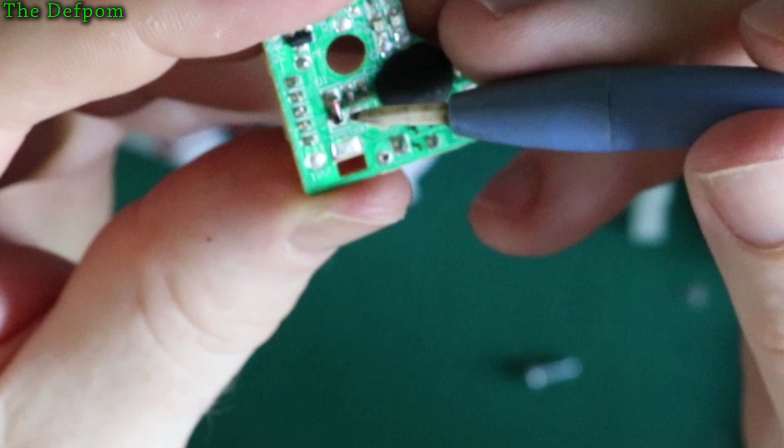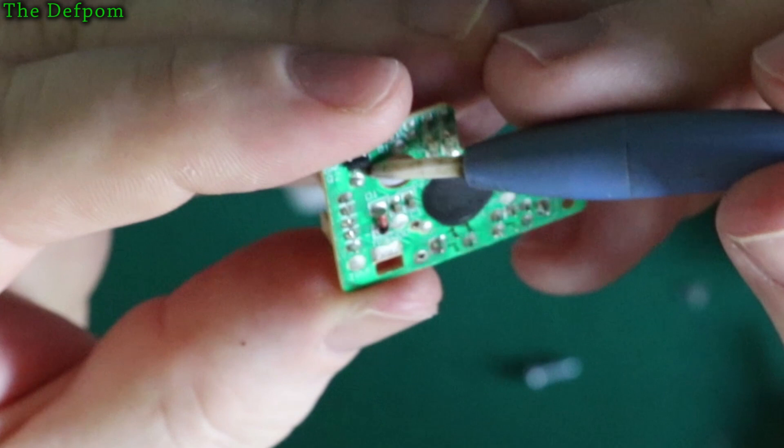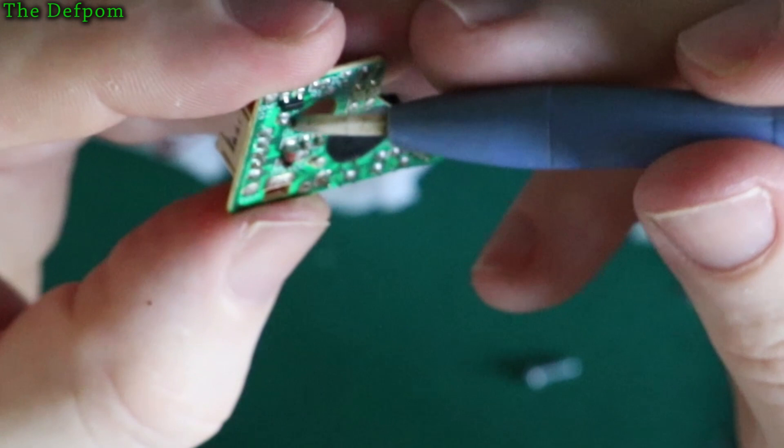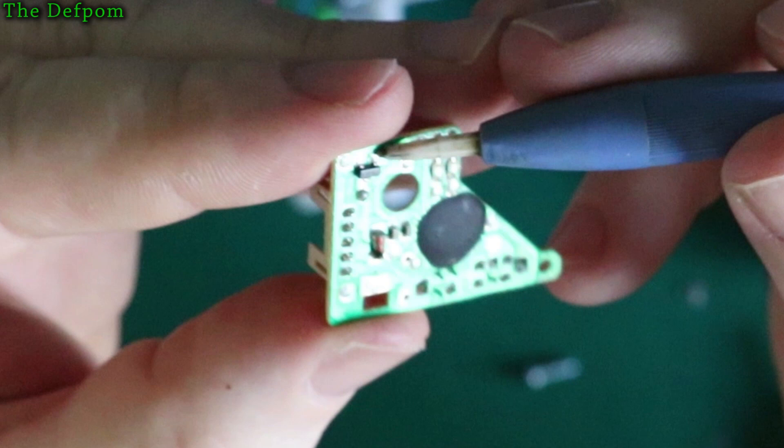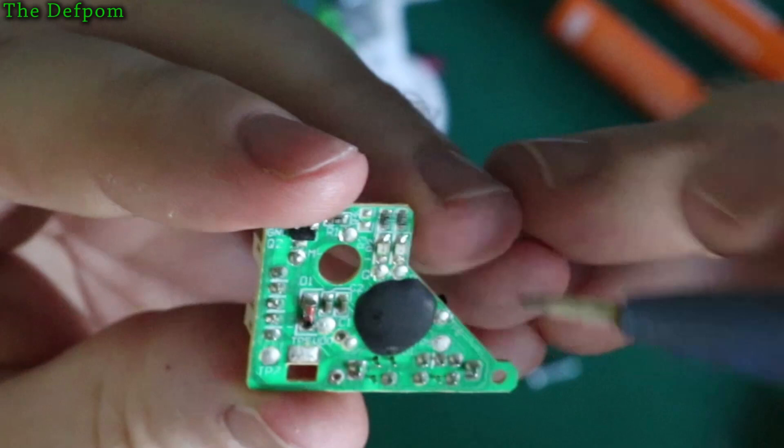That diode there is just reverse polarity protection. And that transistor there is going to that pin there, which is the motor. So it's obviously switching the motor as expected. There's a ground connection, so it's switching the negative. The gate goes through that resistor, which is obviously going to the microcontroller. So it's a pretty simple circuit. All the brains is behind that little blob there. More power. Will it be bad for the microcontroller? Potentially.